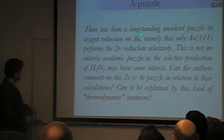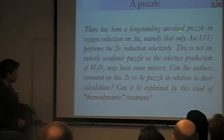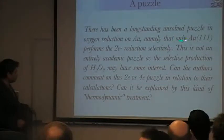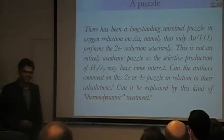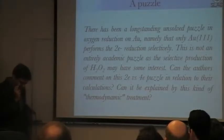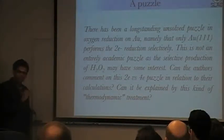We asked the following question: there's a long-standing unsolved problem, that is that Au(111) performs a two-electron reduction selectively. Can we explain this using this treatment?